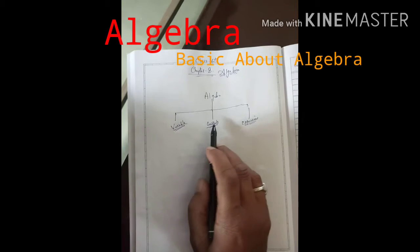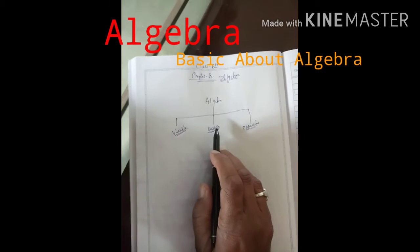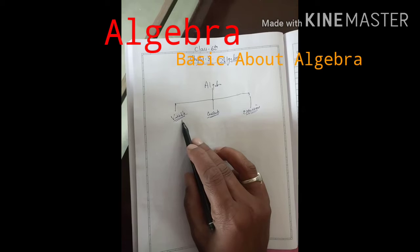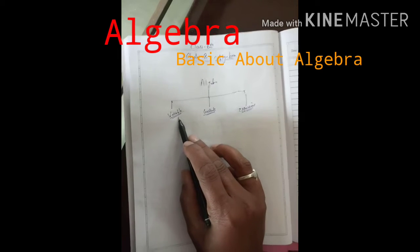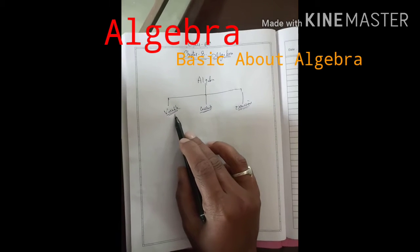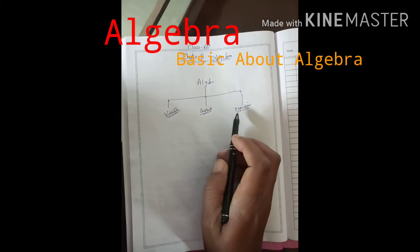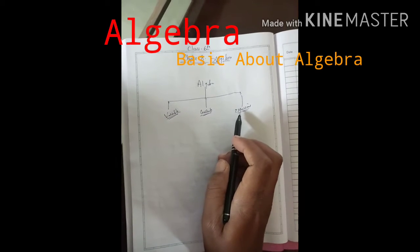Algebra तीन groups में classified है, मतलब divide है। पहला variable — V-A-R-I-A-B-L-E — variable, constant, और expressions।